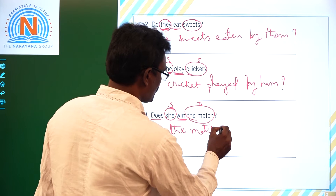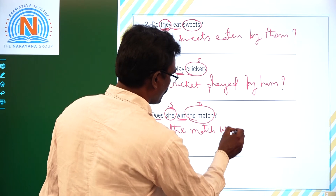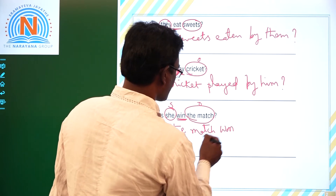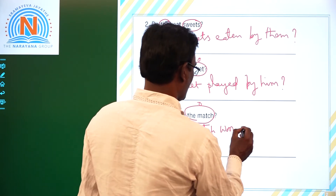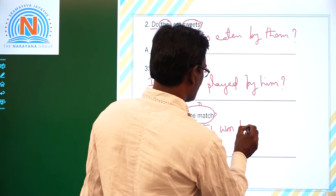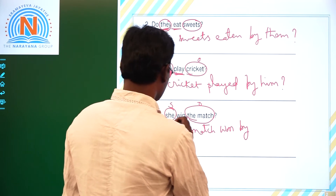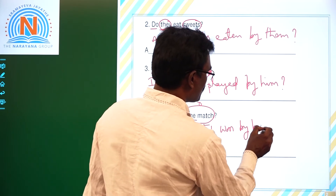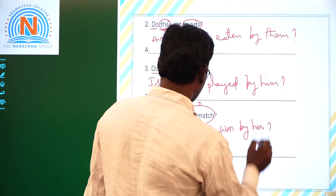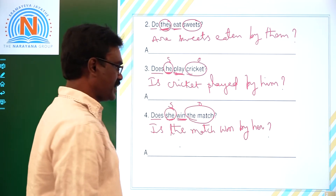V3 of 'win' is 'won.' 'He' becomes 'him' — subject becomes object. Full answer: 'Is the match won by him?'